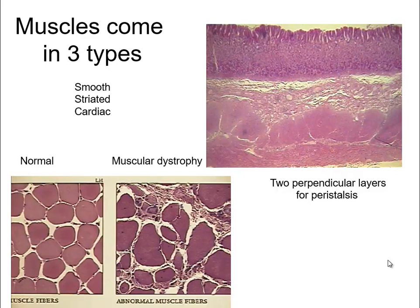In this particular picture I'm showing you what normal muscle fibers look like as opposed to someone who has muscular dystrophy. You can clearly see there's a difference — if you took a biopsy of someone with muscular dystrophy, their muscles wouldn't look the same.